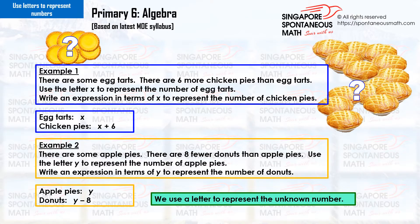Example 1. There are some egg tarts. There are six more chicken pies than egg tarts. Use the letter x to represent the number of egg tarts. Write an expression in terms of x to represent the number of chicken pies. The number of chicken pies is x plus six.